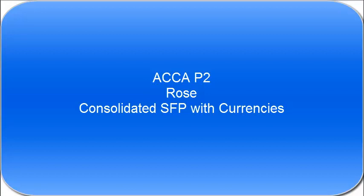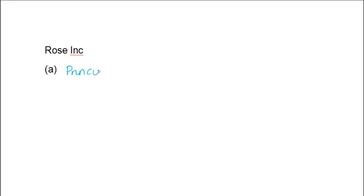This is the question called Rows. In respect of Rows, what we're going to do initially is the written part of the question, which is Part A, and then we're going to turn our attention to the calculation of the group SFP. The first thing we're asked to do in Part A is to determine, discuss, and apply the principles set out in IAS 21 in order to determine the functional currency.